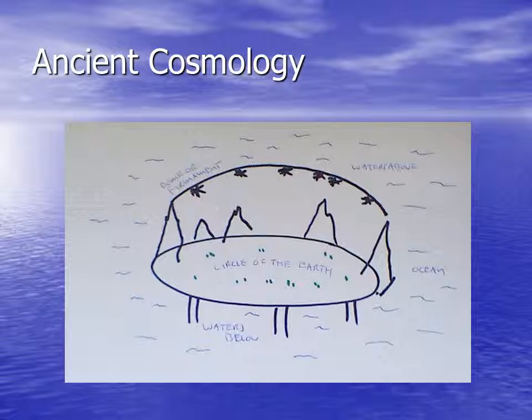Now, this cosmos could also be thought of as a house or a temple. This is the way even some of the Psalms speak about it. Psalm 24, verse 2 reads, 'He has founded it, that is the earth, upon the seas and established it upon the rivers.' Psalm 104, verse 3 to 5 states that God lays the beams of his chambers on the waters. He set the earth on its foundations so that it should never be moved.